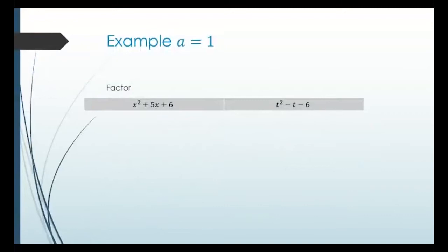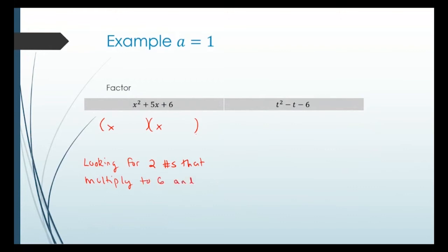The first example is x squared plus 5x plus 6. I know automatically I have to have an x and an x, because x times x gives me x squared. Now I'm looking for two numbers that multiply to 6, the last number, and add to 5, the middle number. For 6, there's not a lot of choices: 1 times 6 is 6, and 2 times 3 gives you 6, but only 2 and 3 will add up to 5. When everything's plus, those are positive, and that's your answer.